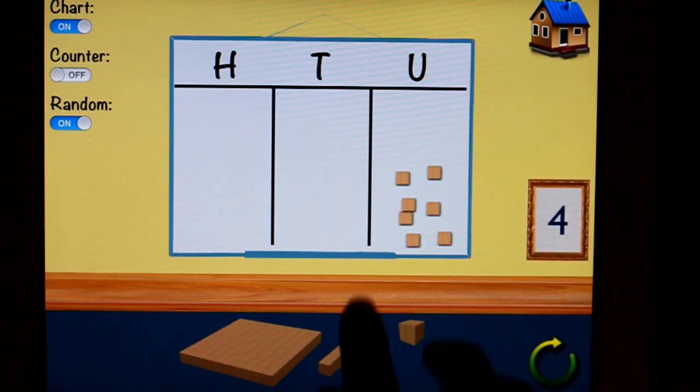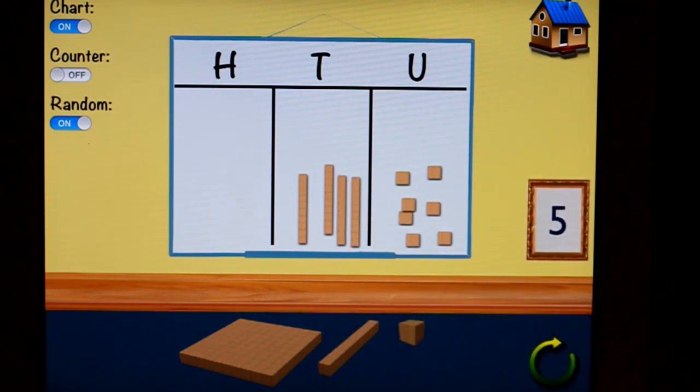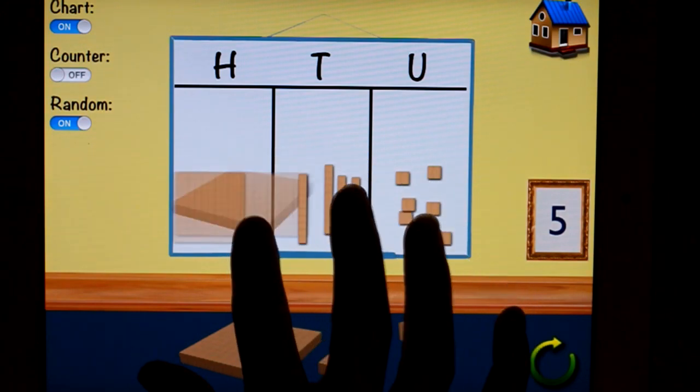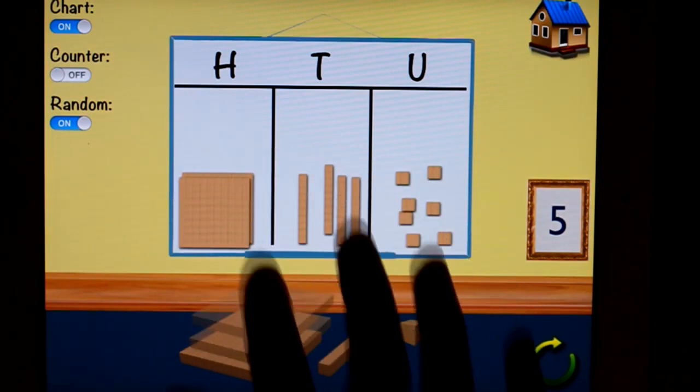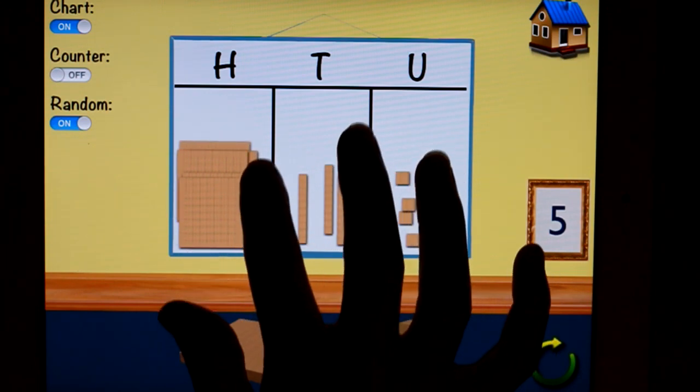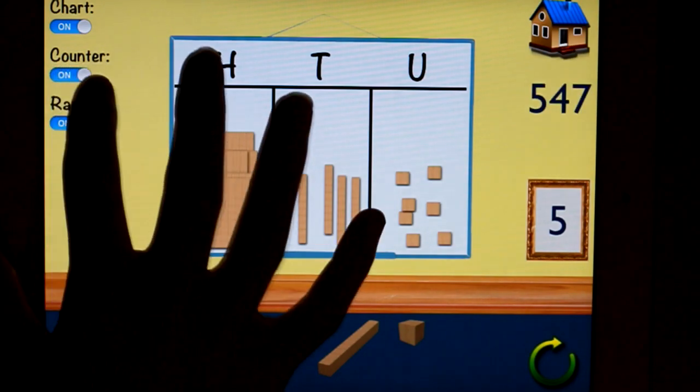I want you to put four tens on the place value chart, one, two, three, four, and I want you to put five hundreds. You need to make sure that it turns into 100, one, two, three, four, five, okay, so then you can ask the child how much, what's that number that you have made, and then self-checking with the counter there.